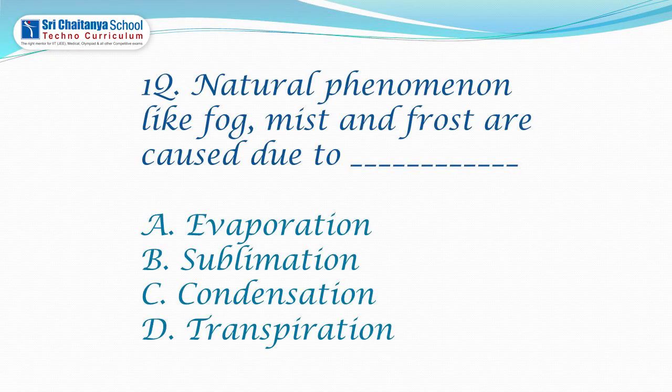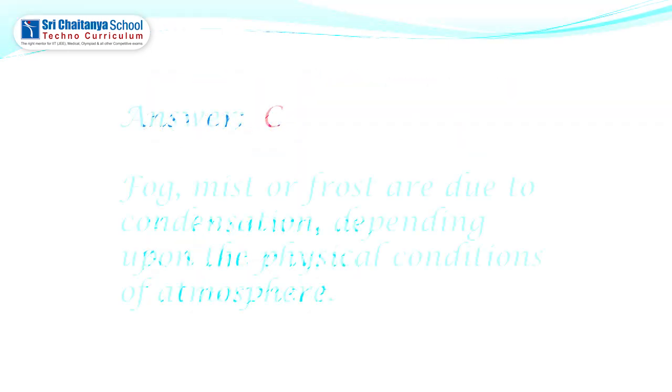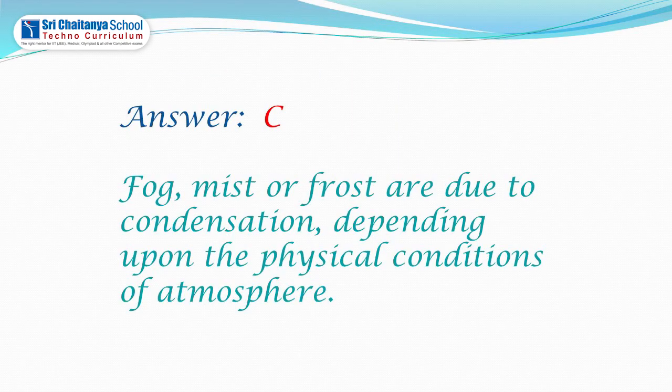The first question: Natural phenomena like fog, mist, and frost are caused due to — A. Evaporation, B. Sublimation, C. Condensation, D. Transpiration. Can you guess the answer? Yes, the answer is C, that is condensation. Fog, mist, and frost are due to condensation, depending upon the physical condition of the atmosphere.